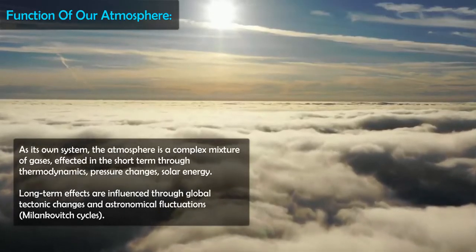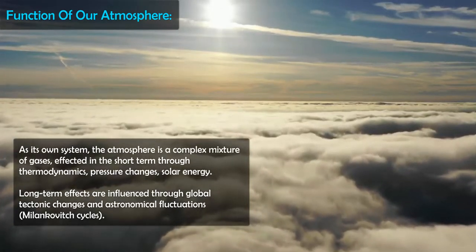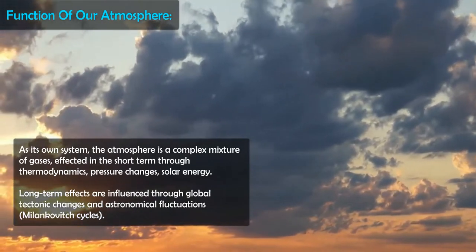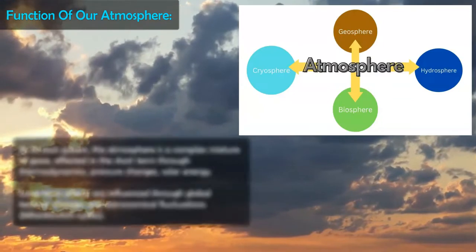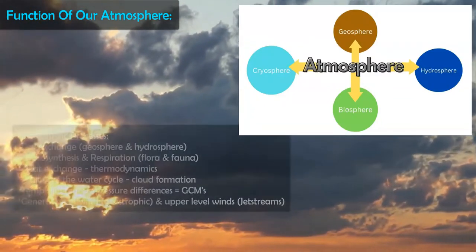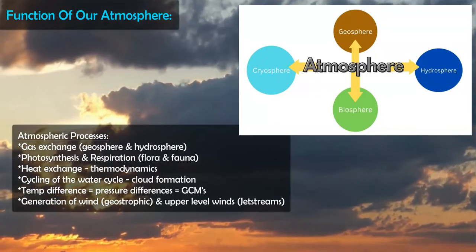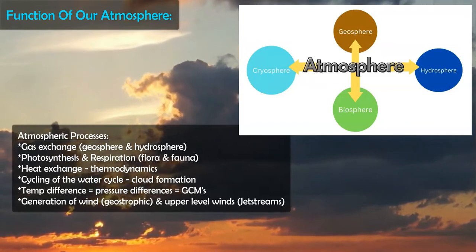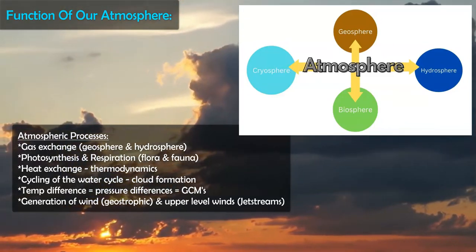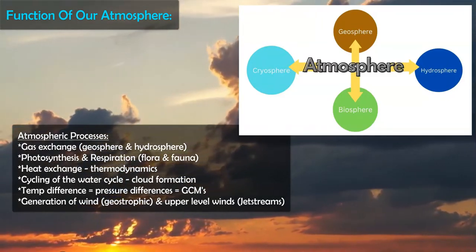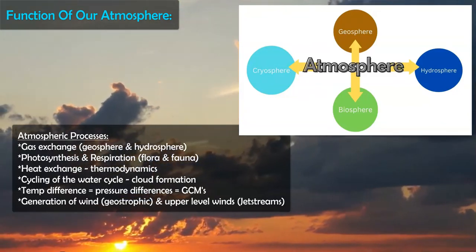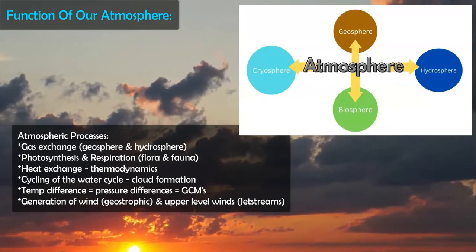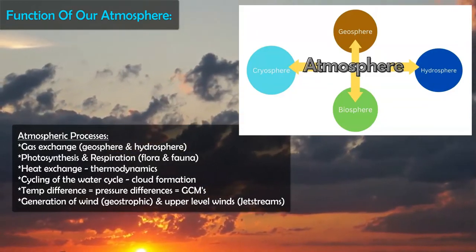Our atmosphere has a set of functions and processes that support life on the planet and support other systems. This includes interactions with the geosphere, hydrosphere, and biosphere. There is an exchange of gases — oxygen, CO2, and nitrogen — through biogeochemical cycles that flow throughout the atmosphere and Earth's surface. The atmosphere also protects the surface through the burn-up of meteors in the mesosphere. Life is supported through the role of gases and respiration of oxygen and CO2 through animals, flora, and fauna, enabling the beautiful, lush ecosystems on our planet.